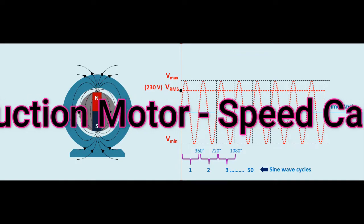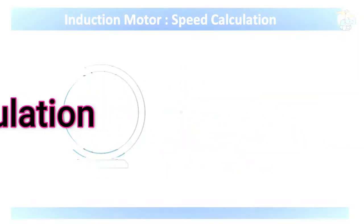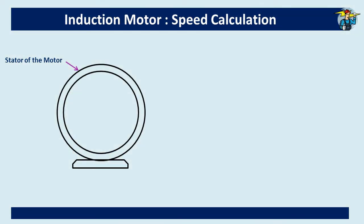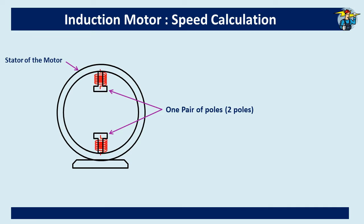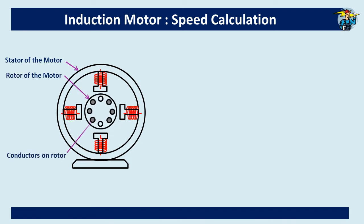Today let's see how to find the speed or RPM of an induction motor. What you see is the stator of an induction motor. There are two poles, or rightly speaking one pair of poles, fitted vertically inside the stator. These are called poles because when you wind a coil around them and make current flow through them, they act as a magnetic pole creating a magnetic field around them.